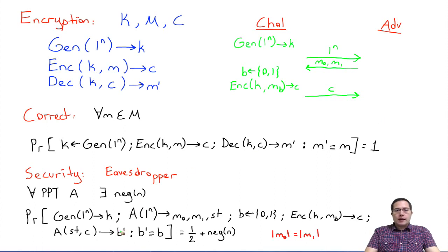And this b prime is an output. So the adversary is going to send this b prime to the challenger, or it is going to output it. Remember this is a game. We call that adversary wins if b prime is equal to b in this game.